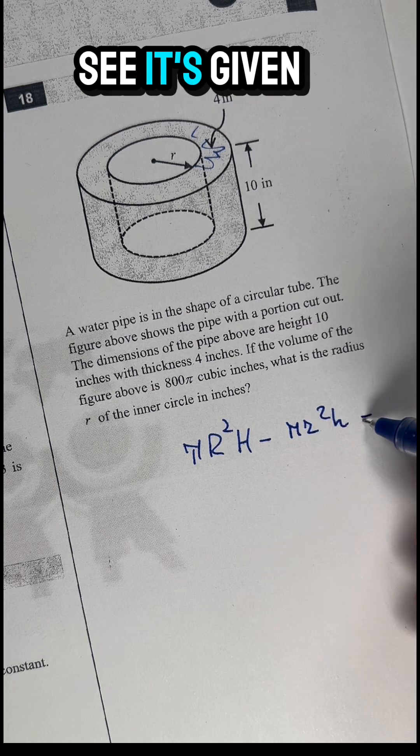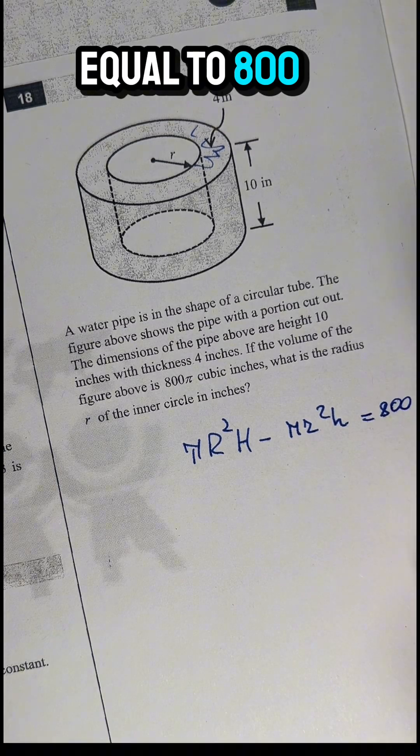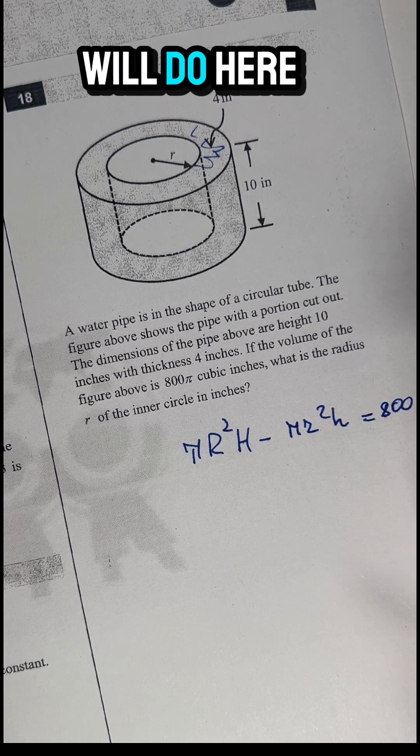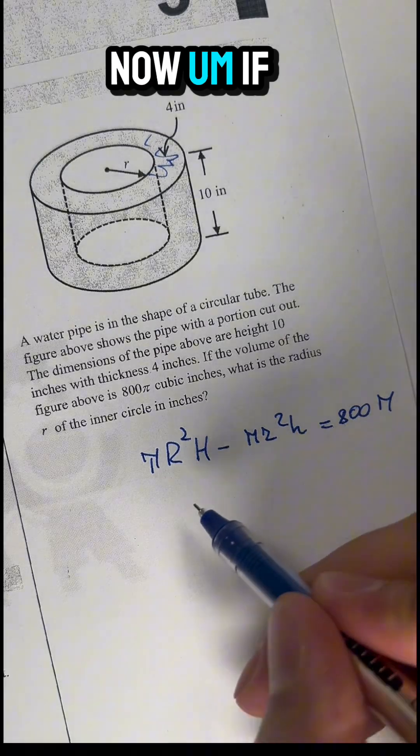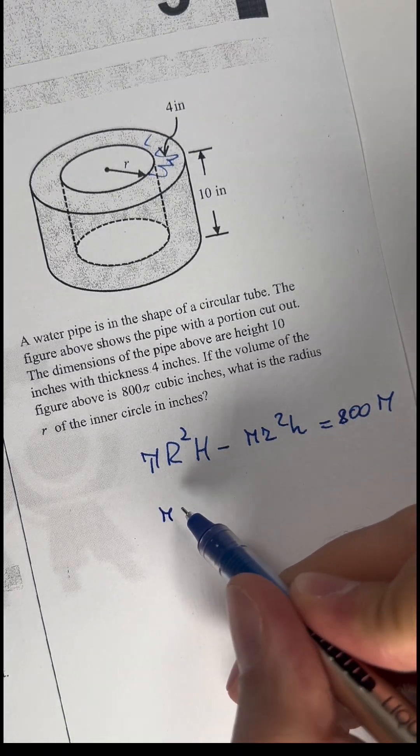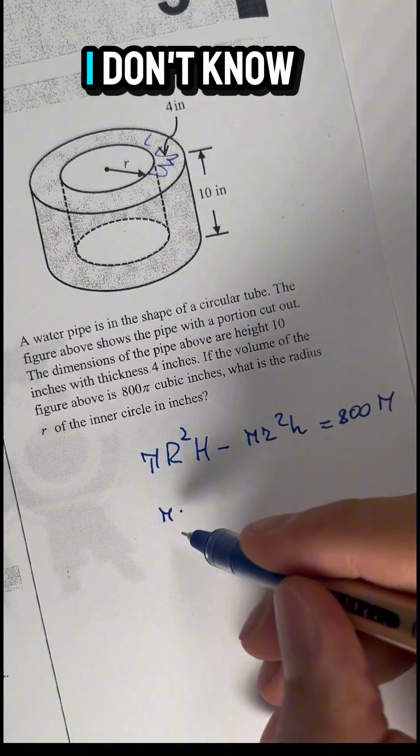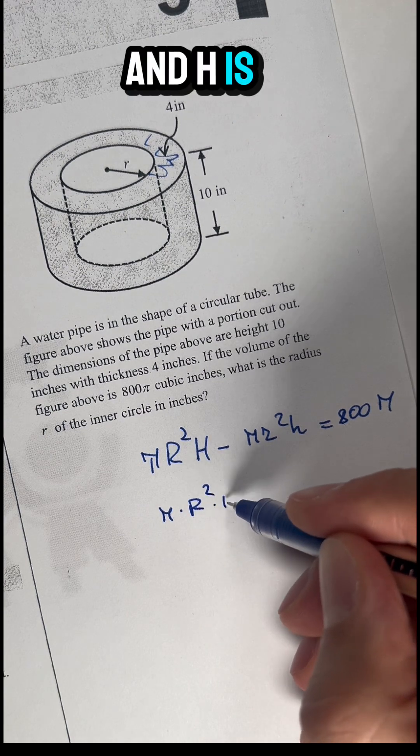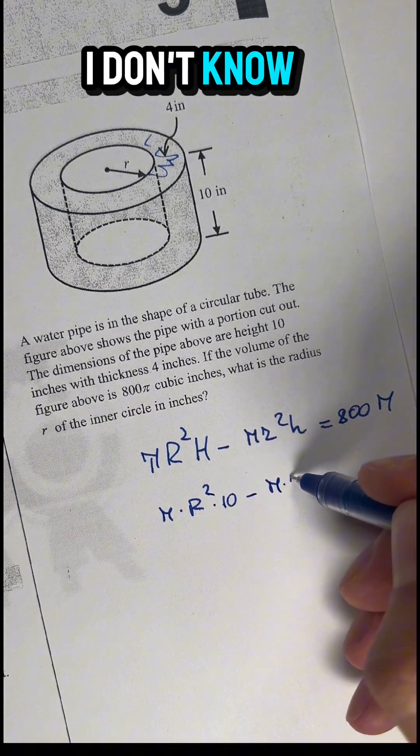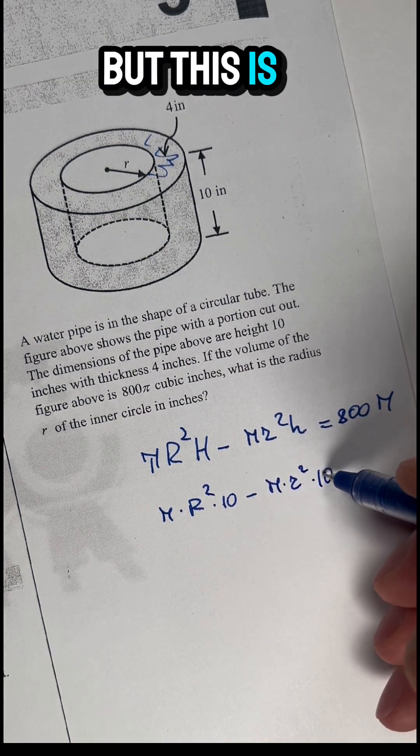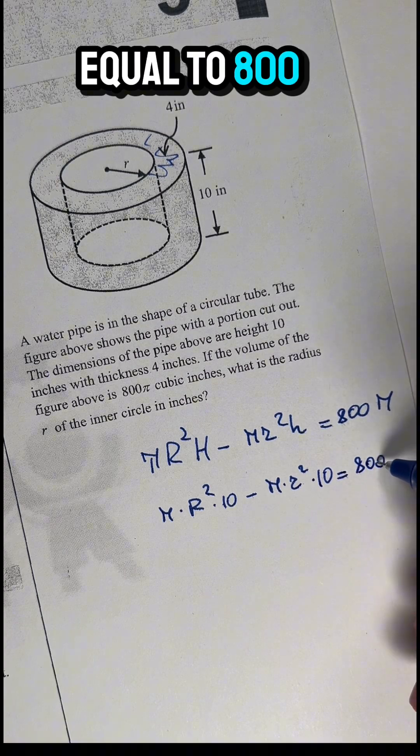It's given that this equals 800π. If I take π times the greater R squared, and h is 10, minus the smaller one, and this is 10 too, equals 800π.